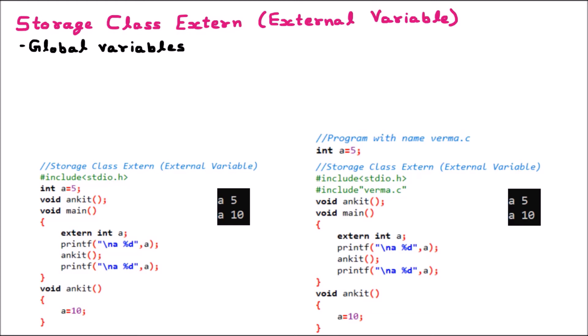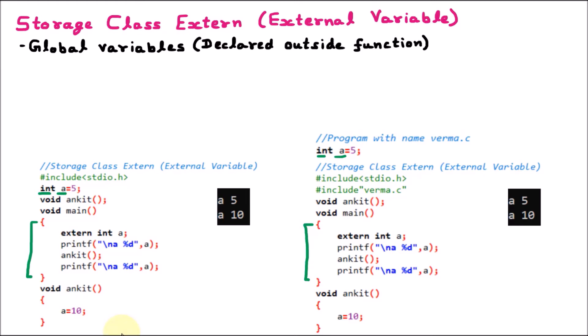Global variables are the variables which are declared outside the main. We can see that in the first example we have the main function, and above that we have declared one variable, int a, which is above the main. Similarly, in another example we have created one another file where we have declared int a. So they are not part of main — they are declared outside any function. External variables or the global variables are not part of any function, whether it is main or any user-defined function.